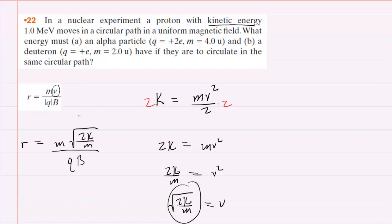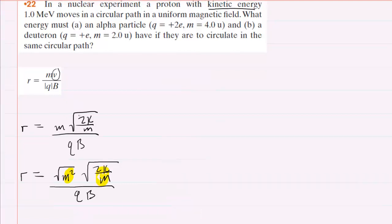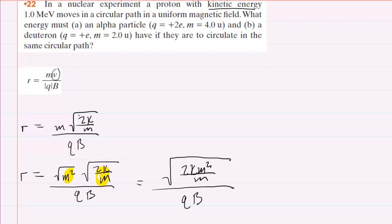These particles are all positively charged, so we don't need the absolute value. We're going to rewrite m as the square root of m squared. Recall that when you take the square root of a variable squared, you just have that variable. The reason we want to do that is because we want both terms in the numerator to be underneath a square root, because if they're both underneath a square root, we can multiply them. So we'll have a big square root with 2Km² over m, all divided by qB. We can cancel a factor of m underneath that square root.